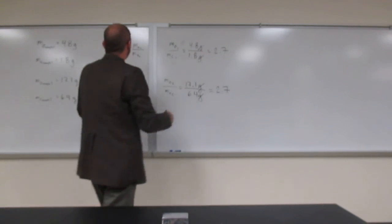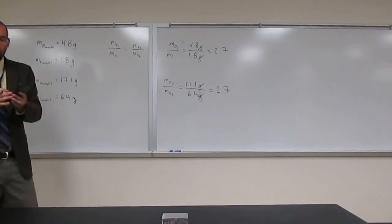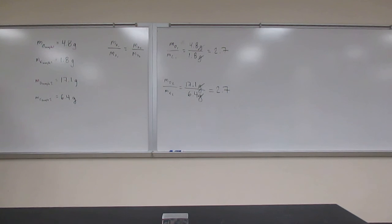As you can see, 2.7 equals 2.7. This confirms the law of constant composition. If there are any questions, we'll do another example in a moment.